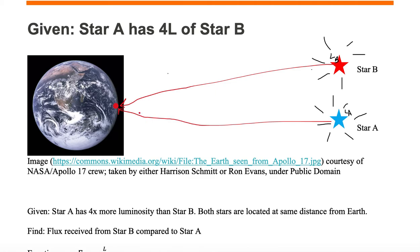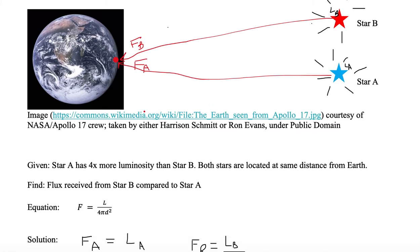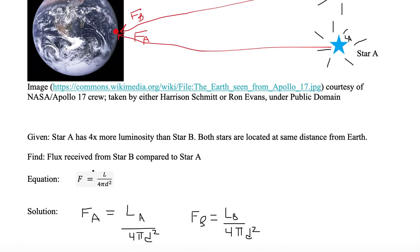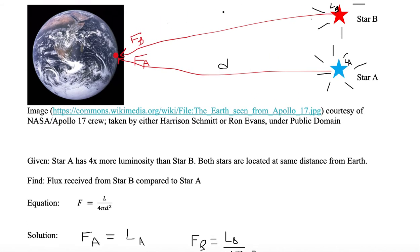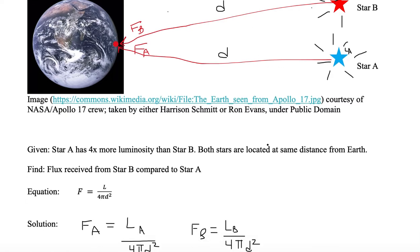We call this flux. We want to know what is the flux of one star compared to the flux of the other star. Flux is the amount of luminosity that leaves the star in all different directions, but we want to know the amount that lands in one square meter on the surface we're looking at, which in this case is Earth. The equation is: flux equals the luminosity divided by four pi d squared, where d is the distance between the star and Earth, which is the same in both cases.